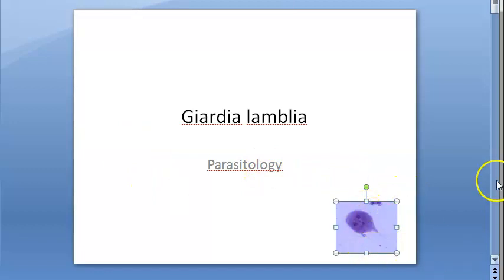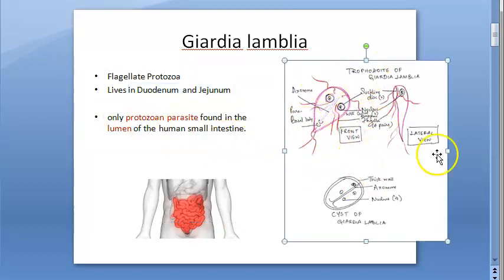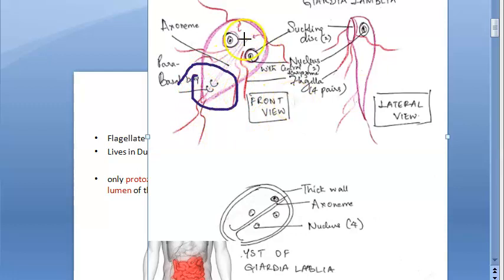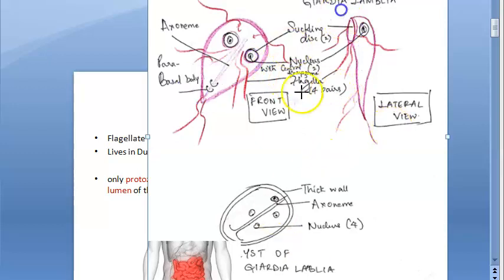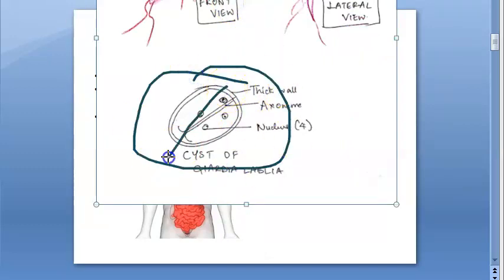Recap: Giardia lamblia is a flagellate protozoa living in the duodenum and jejunum. The trophozoite has four pairs of flagella, two nuclei, parabasal bodies (median bodies), two axostyles, and a suckling disc with a central karyosome. The cyst has a thick wall, an axoneme, and four nuclei when mature. It is the infective form.